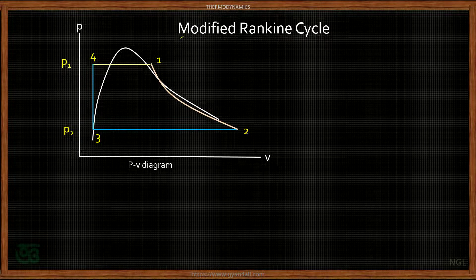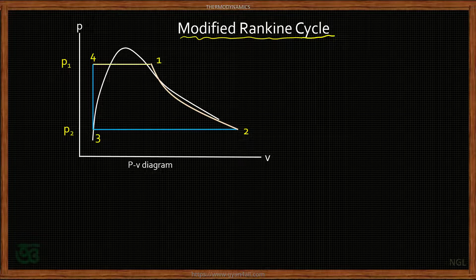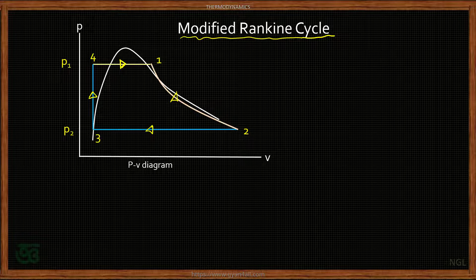Welcome. Today we'll discuss the modified Rankine cycle. In our previous video we discussed the Rankine cycle for thermal power plants. In the Rankine cycle PV diagram, process 3-4 represents the pumping process, process 4-1 represents heat addition in the steam boiler, process 1-2 represents the prime mover — which may be a steam turbine or reciprocating steam engine — and process 2-3 represents condensation in the condenser.